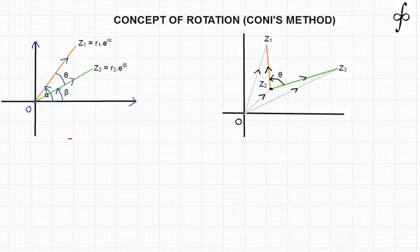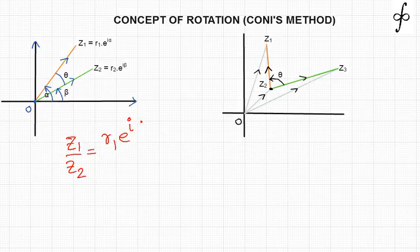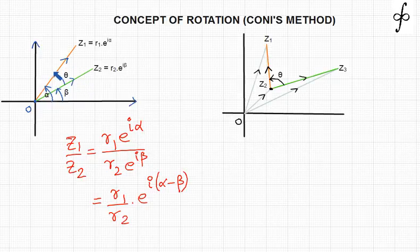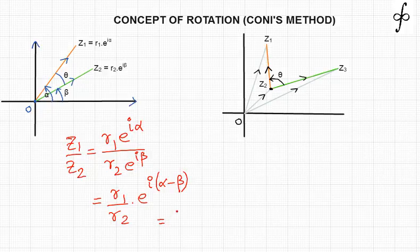If we divide the two complex numbers — z1 by z2 — we get r1·e^(iα) divided by r2·e^(iβ), which gives r1/r2 · e^(i(α−β)). From the figure, this angle α−β is nothing but the angle theta: alpha covers this much, beta covers this much, and the angle in between is theta.